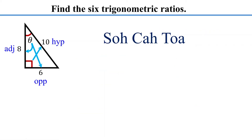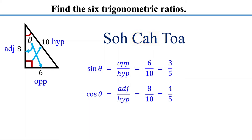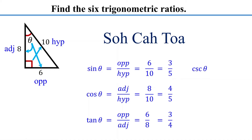Now use SOHCAHTOA to find the trigonometric ratios. Sine is opposite over hypotenuse: 6/10, which reduces to 3/5. Cosine is adjacent over hypotenuse: 8/10, which reduces to 4/5. Tangent is opposite over adjacent: 6/8, which simplifies to 3/4. Cosecant is the reciprocal of sine: 5/3. Secant is the reciprocal of cosine: 5/4. Cotangent is the reciprocal of tangent: 4/3.